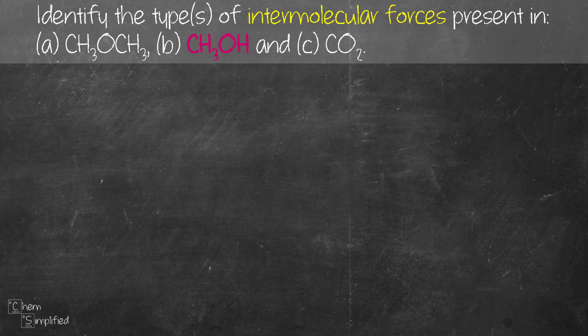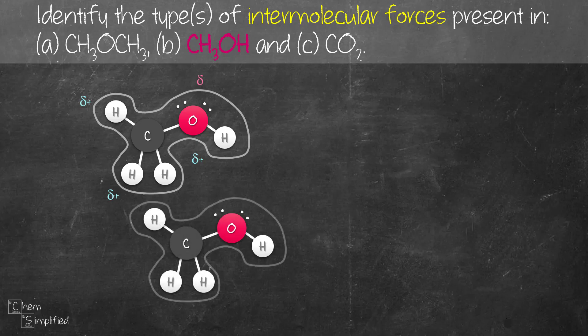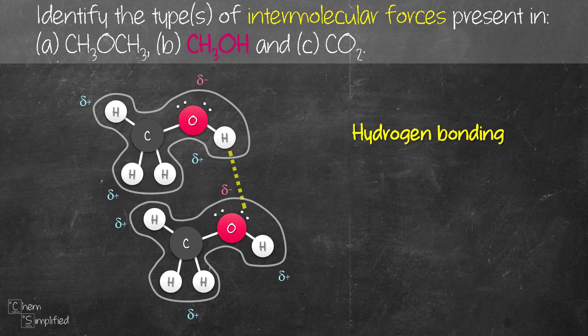Now let's move on to the next molecule, which is methanol — an alcohol that looks like this. If we imagine another methanol right next to it, since we have a hydrogen that is directly connected to that oxygen, hydrogen bonding is present between the two molecules.